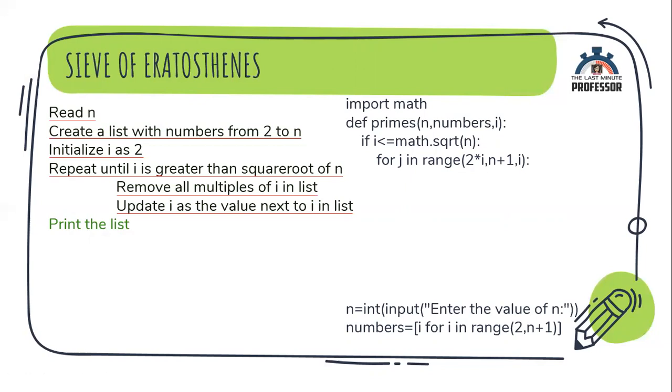Starting from 2i, I must remove like 2i, 3i, 4i, 5i. That is the reason 2 into i has been given here and incremented in terms of i. Till which number should I do? I have to go through the entire list. The entire list contains till n. So, that is the reason here I have given it as n plus 1.